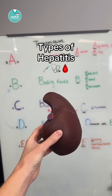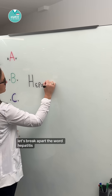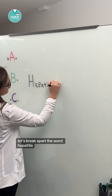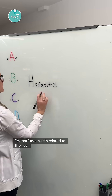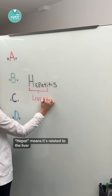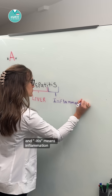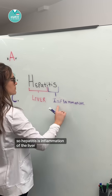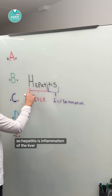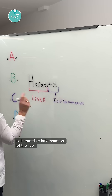Let's talk about the types of hepatitis. First, let's break apart the word: 'hepat' means it's related to the liver, and 'itis' means inflammation. So hepatitis is inflammation of the liver.